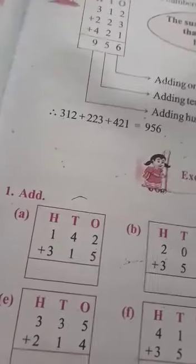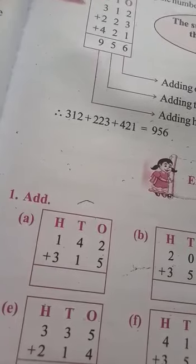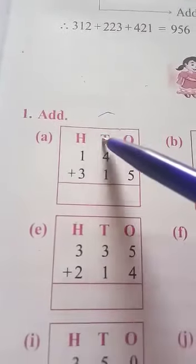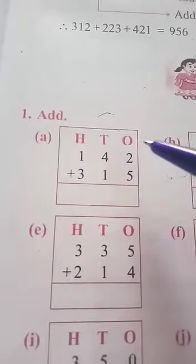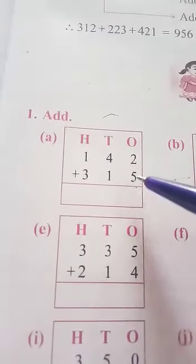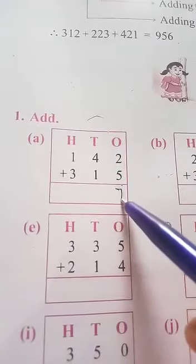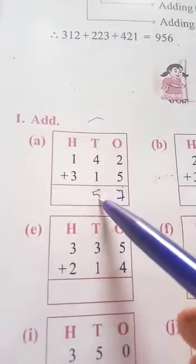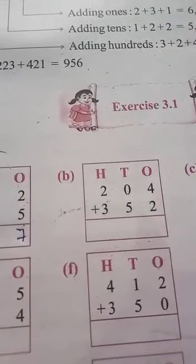Exercise 3.1. Add: ones place, tens place, hundreds place. 2 and 5 add equals 7. 4 and 1 add equals 5. 1 and 3 add equals 4. Without carry, no carry used.